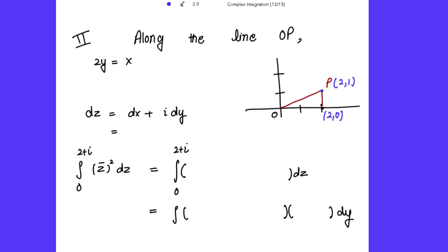For Part B, we evaluate the integral along the line OP where 2y = x. From 2y = x we get 2·dy = dx. Since dz = dx + i·dy, substituting dx = 2·dy gives dz = 2·dy + i·dy = (2 + i)·dy.